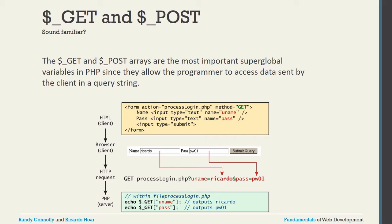There are two very popular super globals: $_GET and $_POST. These are the most important super global variables in PHP and they allow the programmer to access data sent by the client. For example, in a form with action set to a page name and method equal to GET, you use $_GET to retrieve values by their input name, such as $_GET['username'] and $_GET['password'].